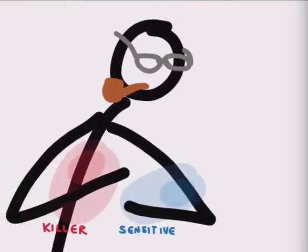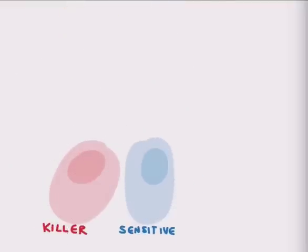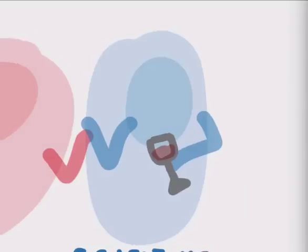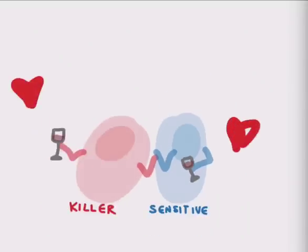But Sonneborn found something amazing about this killing ability. He discovered that it could be transmitted between paramecium by mating, but in a very unusual way. He found that the killer trait was being transmitted not with material from the nucleus, but through the cytoplasm.